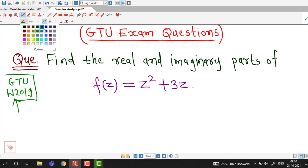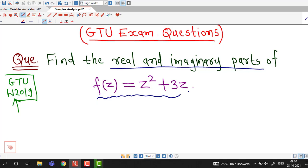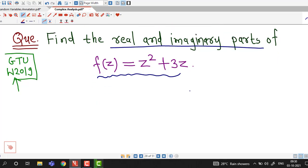The problem is about finding real and imaginary parts of this complex function f of z equal to z square plus 3z. We have to write our complex function f of z in this form: some function of x and y plus i times some function of x and y. So we have to decide this u and v which are real and imaginary parts of f of z.